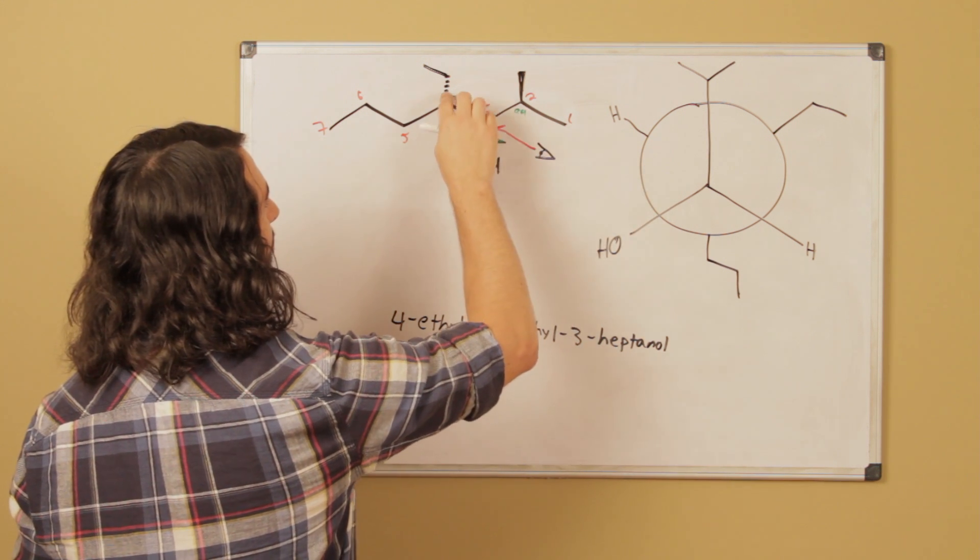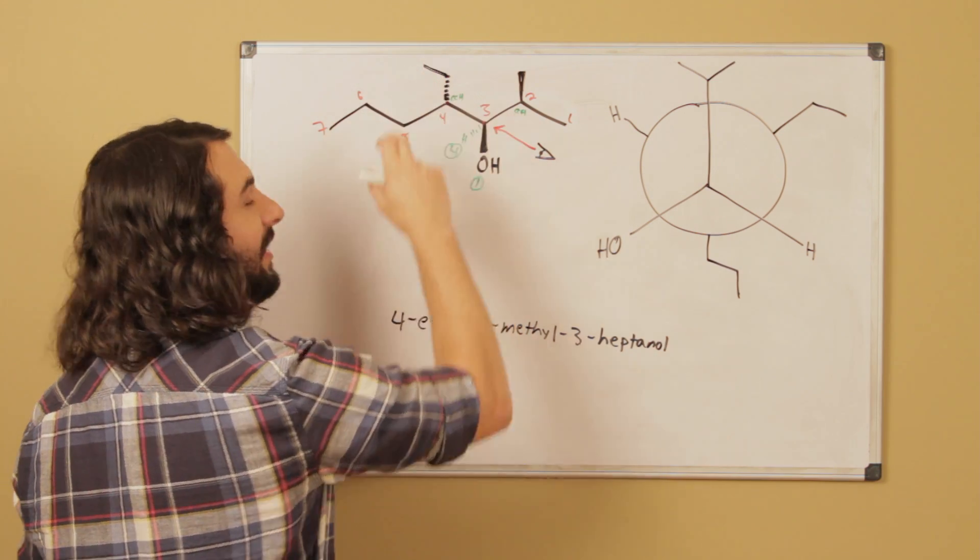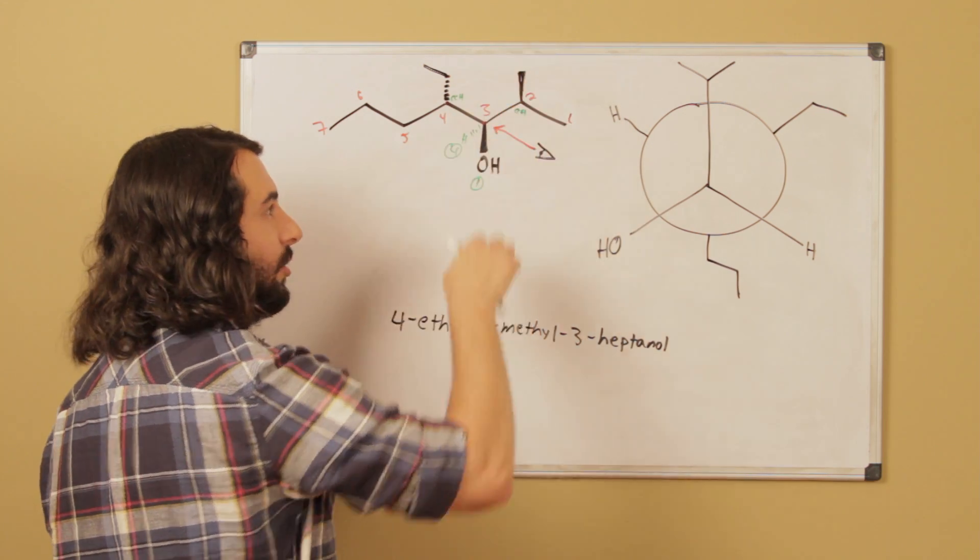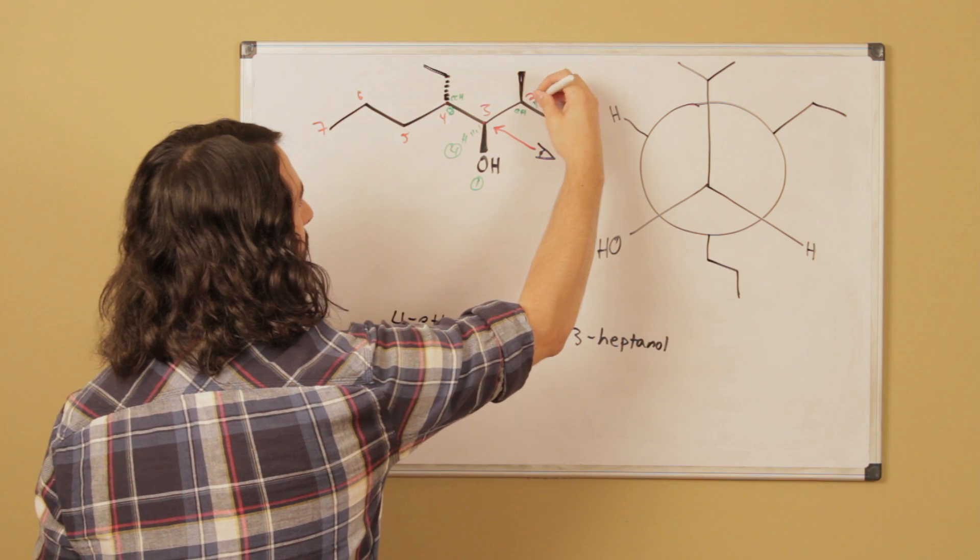And then over here, this one is attached to one carbon, as well as this. So because these two carbons are both attached to one carbon, whereas these carbons are attached to all hydrogens, this one ends up taking priority. And so that is going to be number 3.